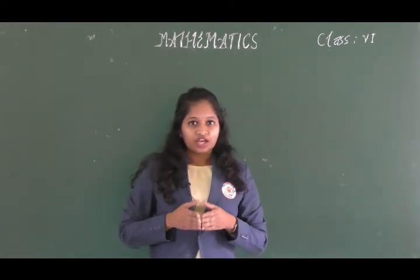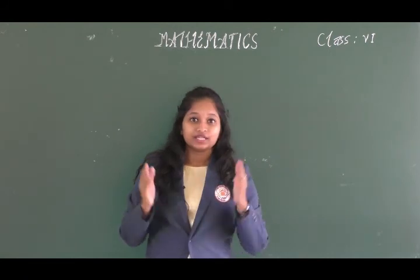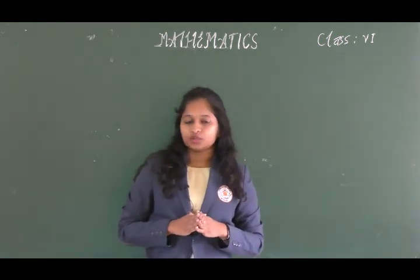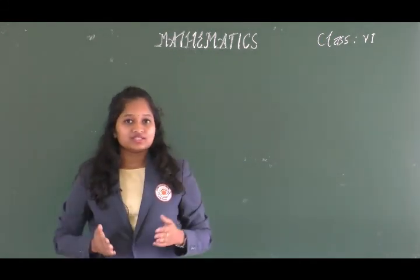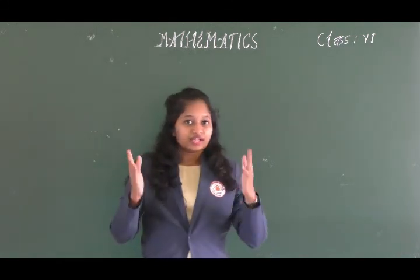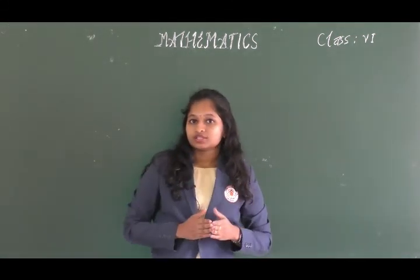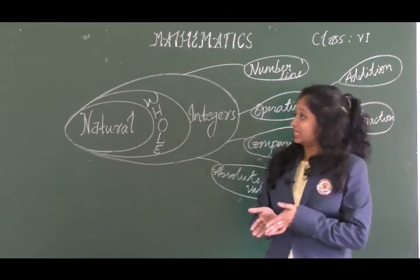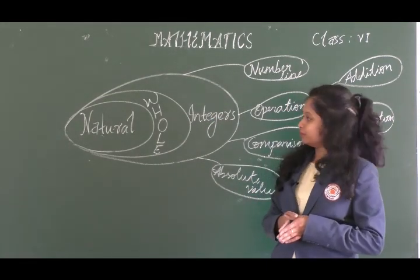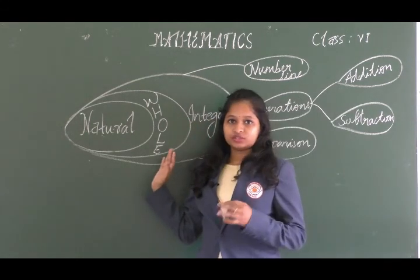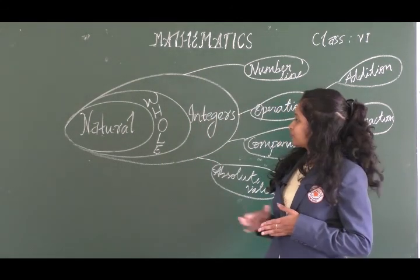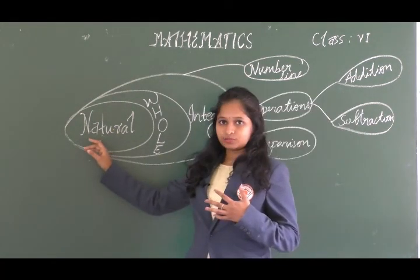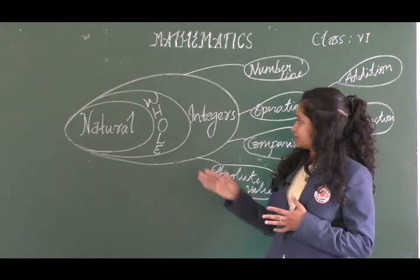Natural numbers with a negative sign are called negative numbers. So integers are the collection of positive numbers, zero, along with negative numbers. This is the mind map for our chapter. The chapter name is integers, which is a collection of natural numbers, whole numbers, and negative natural numbers.